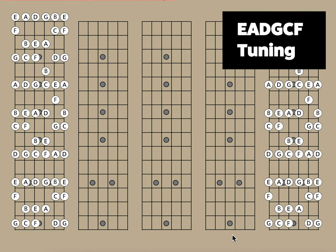The ramification of different tunings is that it changes the relationship of the notes to one another. This is just kind of an in-theory type video. We have EADGCF. Six string basses often start with a low B and go B, E, A, D, G, C.